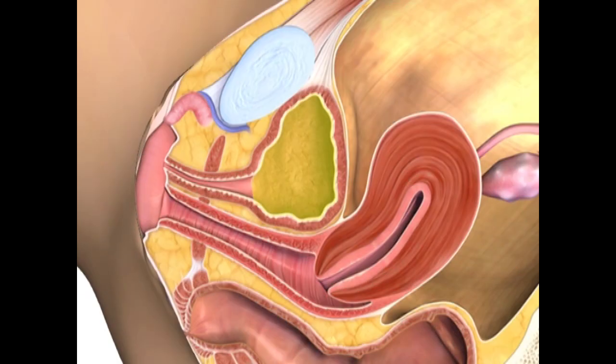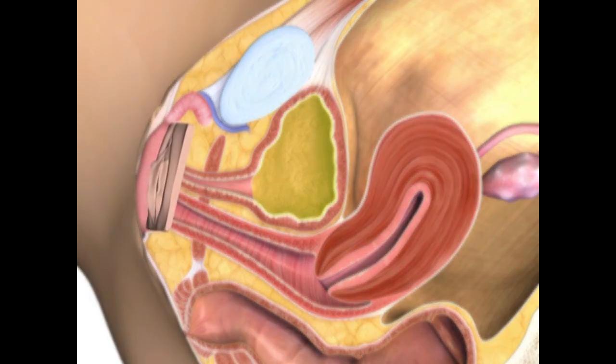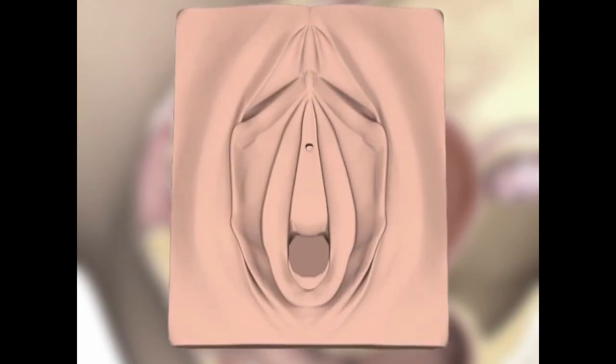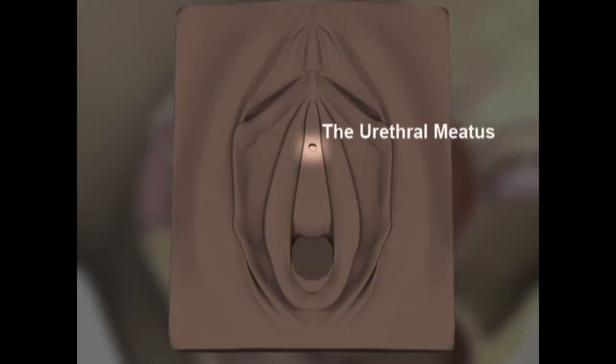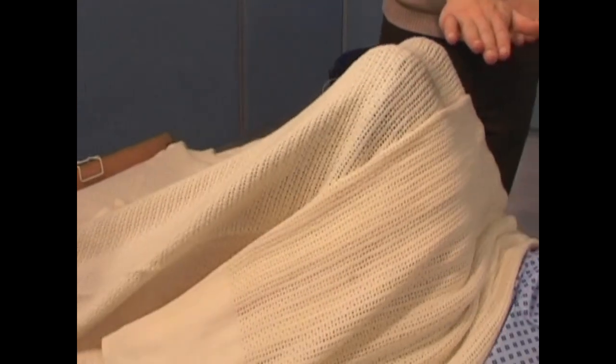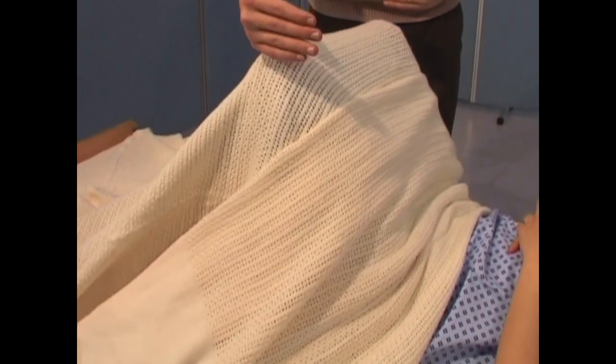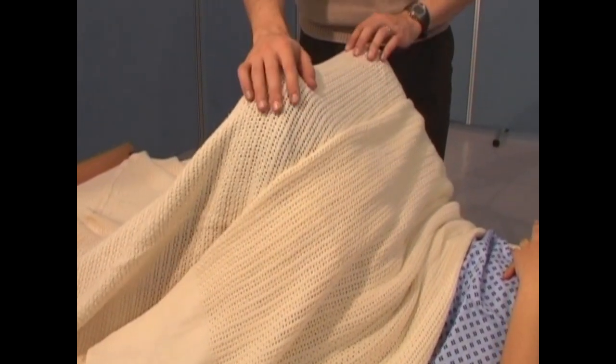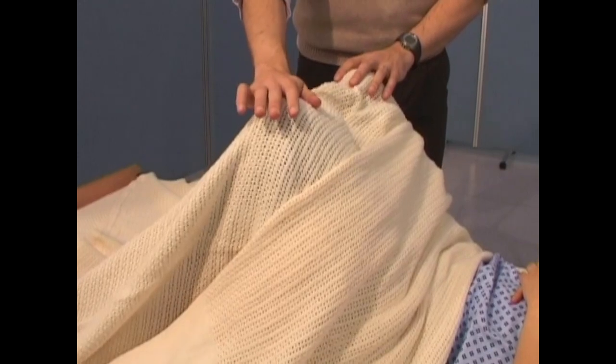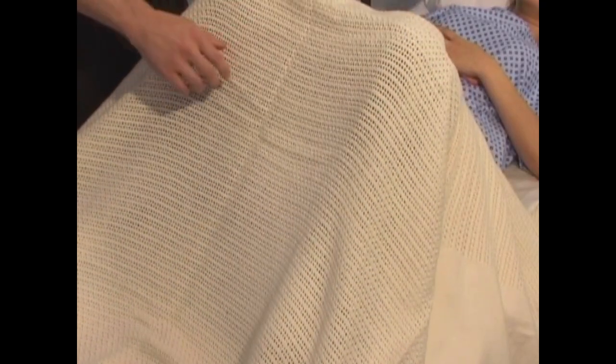The main difference of female catheterisation over male catheterisation is the functional anatomy of the genitourinary tract. The urethral meatus of the female is located anterior to the vaginal opening and may often be difficult to locate. Patient positioning is different from male. The female patient should be in the supine position with hips and knees flexed and feet resting approximately half a metre apart.